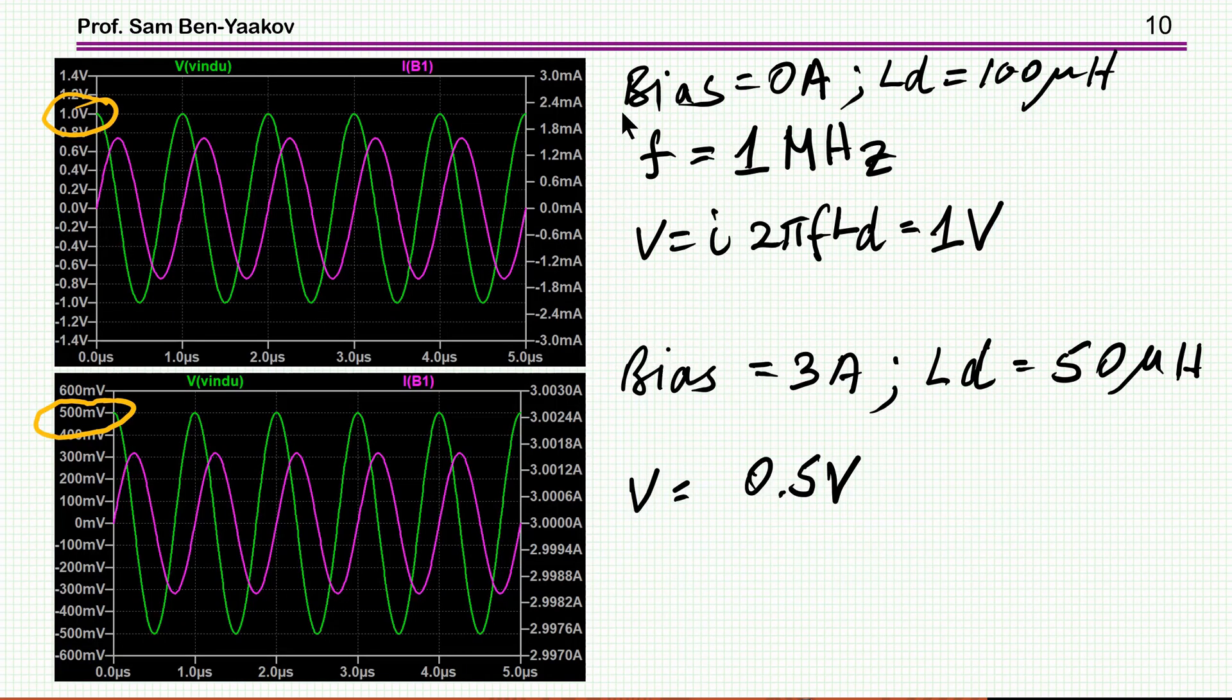For example, with a bias of zero, we know that LD should be 100 micro-Henry. And as it turns out, then the voltage, this is the current, and then the green is the voltage. And it turns out that the voltage is one volt. For this excitation, which is about 1.5 milliamp, I've just tuned it so I'll get one volt at the output. This voltage is equal to the current times 2 pi f and the local inductance, which is 100, and the frequency is 1 megahertz.